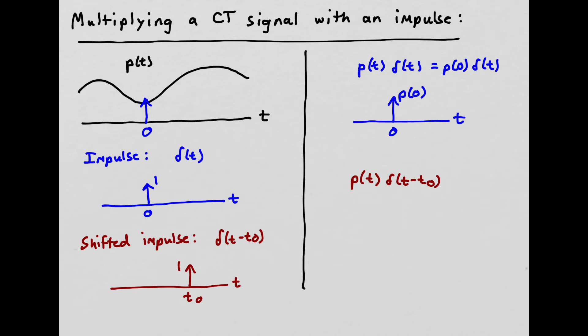So what happens if we multiply by a shifted impulse? So we multiply P of T by an impulse now that's at T0. If we do that, let me just sketch, so T0 is somewhere here. Let me sketch that a little better. T0 is here. It's still a unit impulse that we're multiplying by.